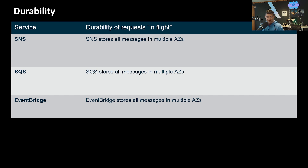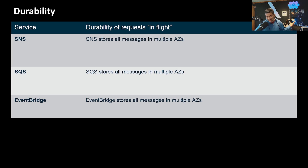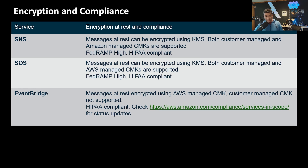Durability: SNS, SQS, and EventBridge all replicate messages into multiple availability zones within a region while the message is in their service - your messages are durable, and even if one AZ goes down your message will still be safe. Encryption and compliance: SNS and SQS have an upper hand here, supporting both AWS-managed and customer-managed KMS keys for messages at rest. EventBridge only supports AWS-managed CMKs.